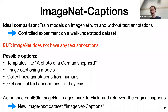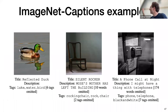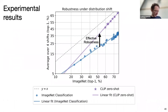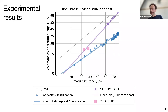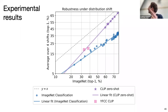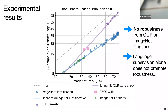To test whether language supervision alone drives robustness, we need to train CLIP on ImageNet with text captions. ImageNet doesn't have text annotations — only class labels — so we did data wrangling to match about half a million ImageNet images to their original Flickr URLs, obtaining human-generated captions. We call this dataset ImageNet Captions. The result: training CLIP models on ImageNet Captions produces green hexagons on the scatter plot that are exactly on the blue baseline. Zero robustness gain from adding text annotations on top of ImageNet — so language supervision alone does not promote robustness.